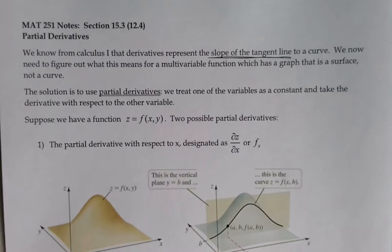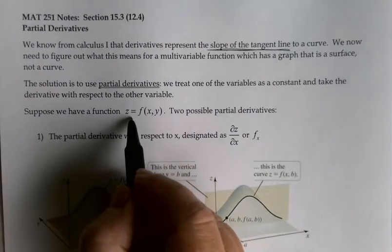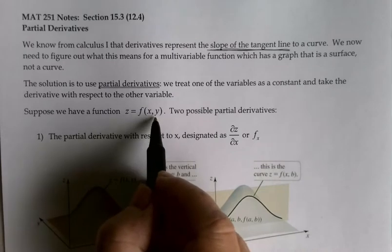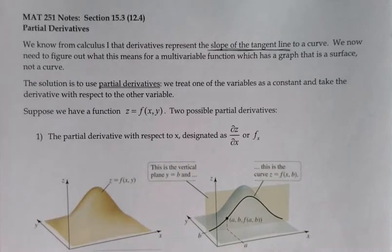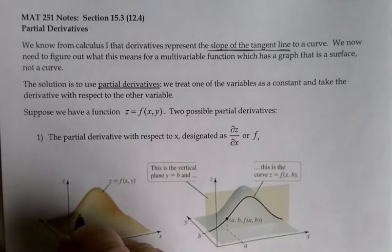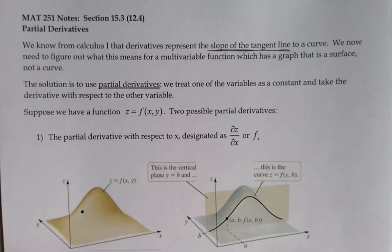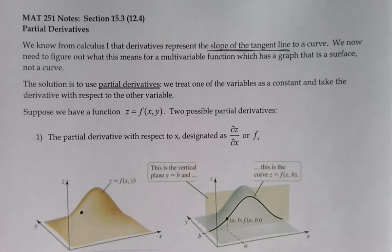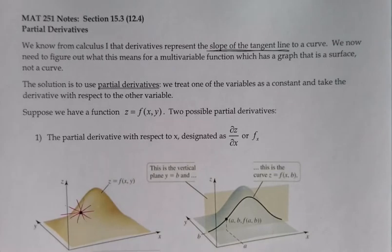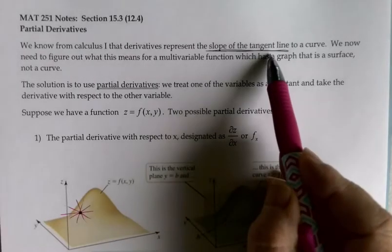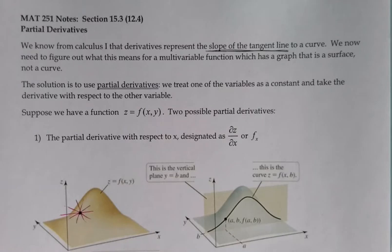Here's the problem with multivariable functions. We know that a function like z equals f of x and y graphs as a whole surface — this is just a generic graph showing some surface z equals f of x and y. If I pick a point on that surface and say I want the derivative at that point to represent the slope of the tangent line, the problem is there are infinitely many tangent lines to the surface at that point. There would be a whole bunch of them, all perfectly tangent at that specific point, so I can't interpret it exactly as the slope of the tangent line to a surface.